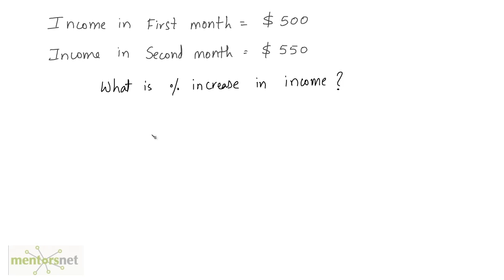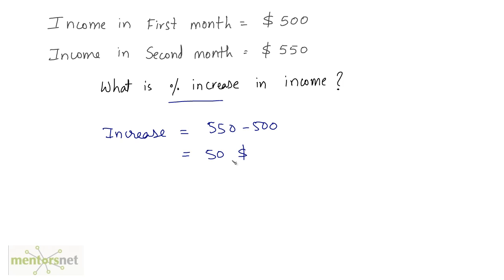To calculate the percentage increase, first calculate how much the value has increased. The increase equals the second month's salary minus the first month's salary: 550 minus 500, so the increase is $50. Now, whenever you calculate percentage increase or decrease, it is always calculated on the base value — that is, on the old value. Here the old value is the first month's income.